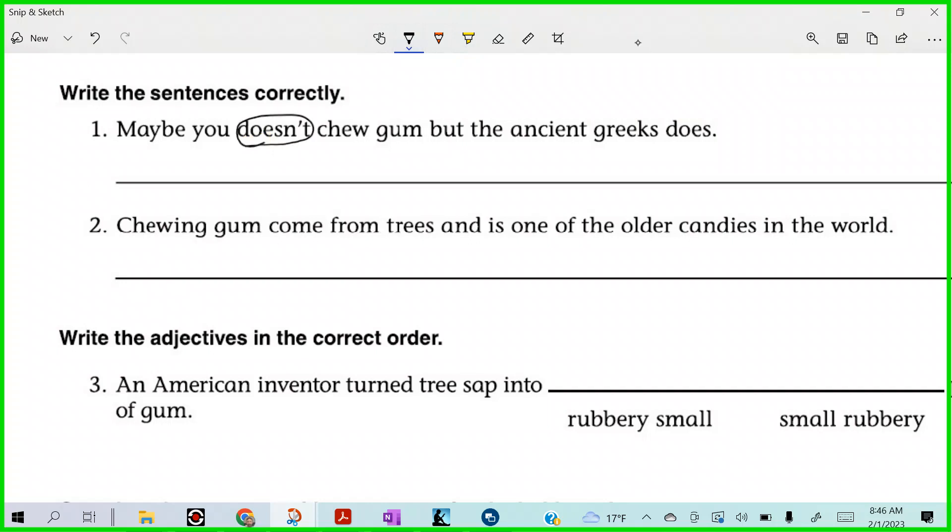So, give me the spelling. Right? D-O-N, apostrophe T. Maybe you don't chew gum, but the ancient Greeks does. Kelly. Maybe you don't. Oh, do down here. Maybe you don't chew gum, but the ancient Greeks do.